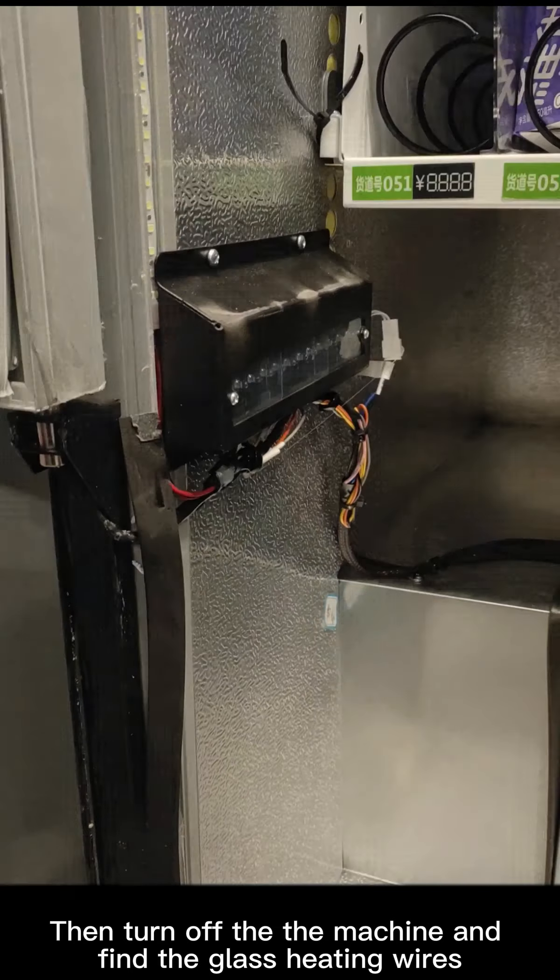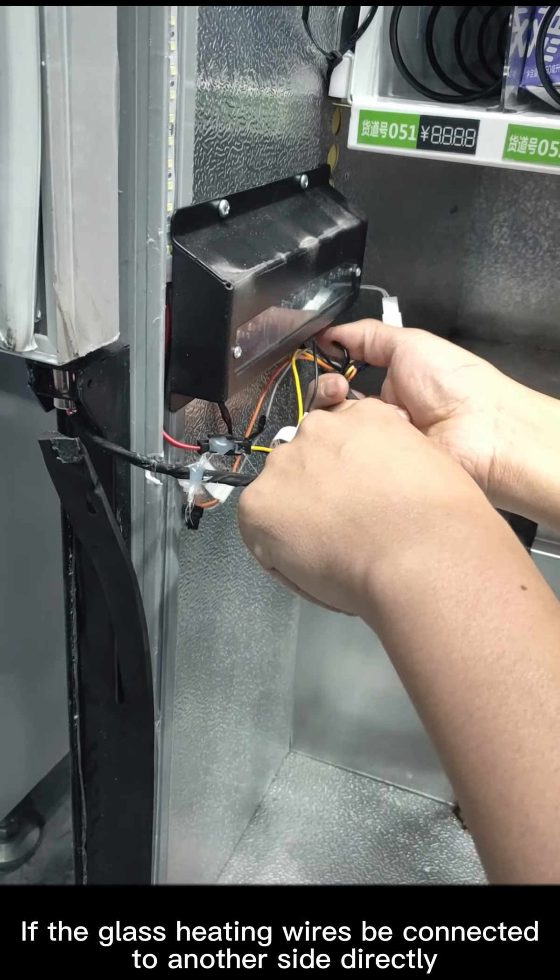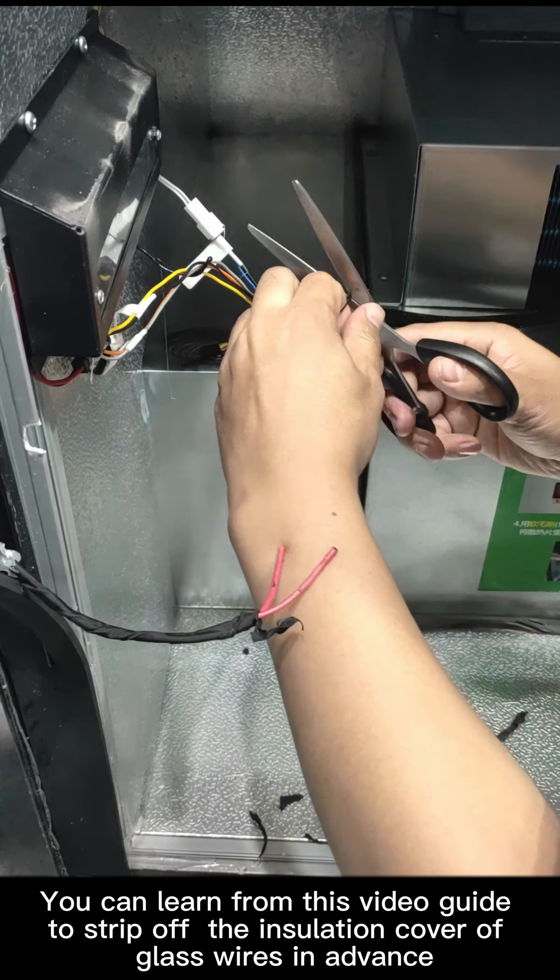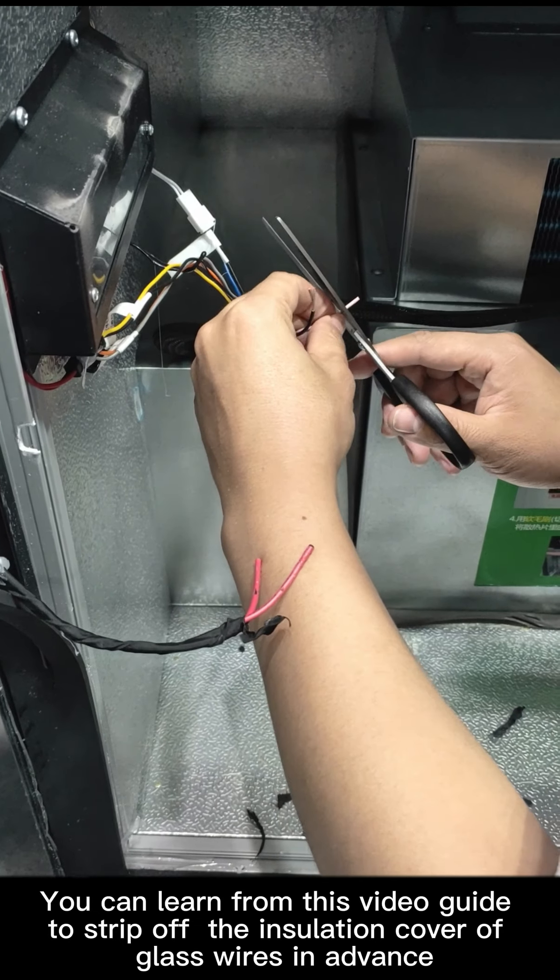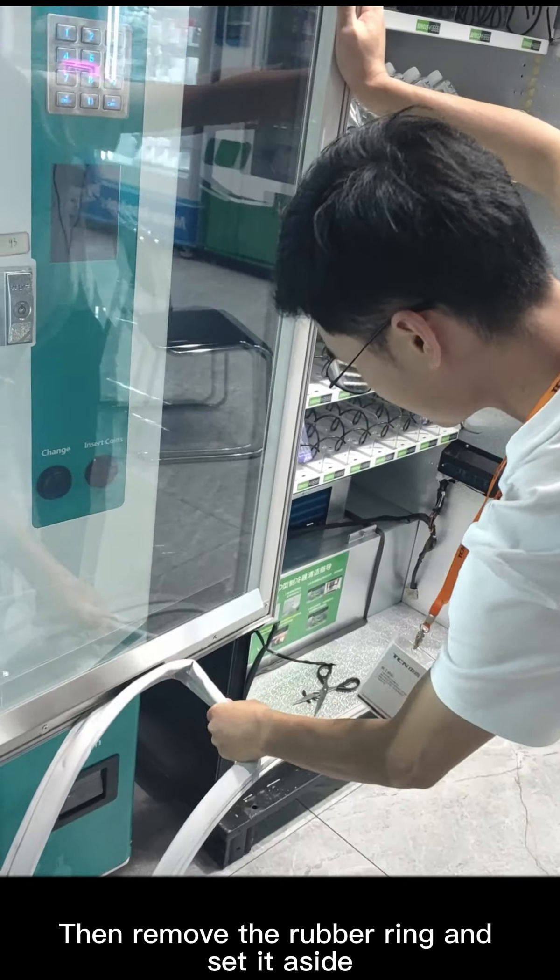Then turn off the machine and find the glass heating wires. If the glass heating wires are connected to another side directly, you can cut it directly with scissors. You can learn from this video guide to strip off the insulation cover of glass wires in advance. Then remove the rubber ring and set it aside.